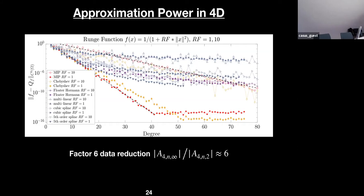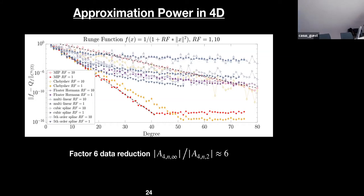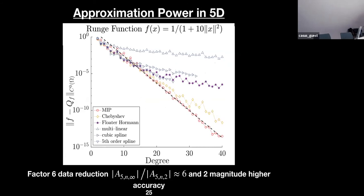We simulated what happens if we make the function simpler by scaling into the hypercube — changing the factor from 10 to 1. Only the R package, Chebfun, and our approach benefit from this simplification. The filled markers are factor 1 and unfilled are factor 10. In dimension 4 we reach machine precision already at degree 41 while the other method needs 47, giving a data reduction factor of 6. Going to dimension 5, we get even 2 magnitudes better accuracy and another factor of 6 reduction.